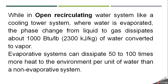The main difference between the three types is that two are based on the non-evaporative principle — no evaporation of water takes place — while one type, the open recirculating system, uses evaporation and is therefore more efficient compared to the other two types.